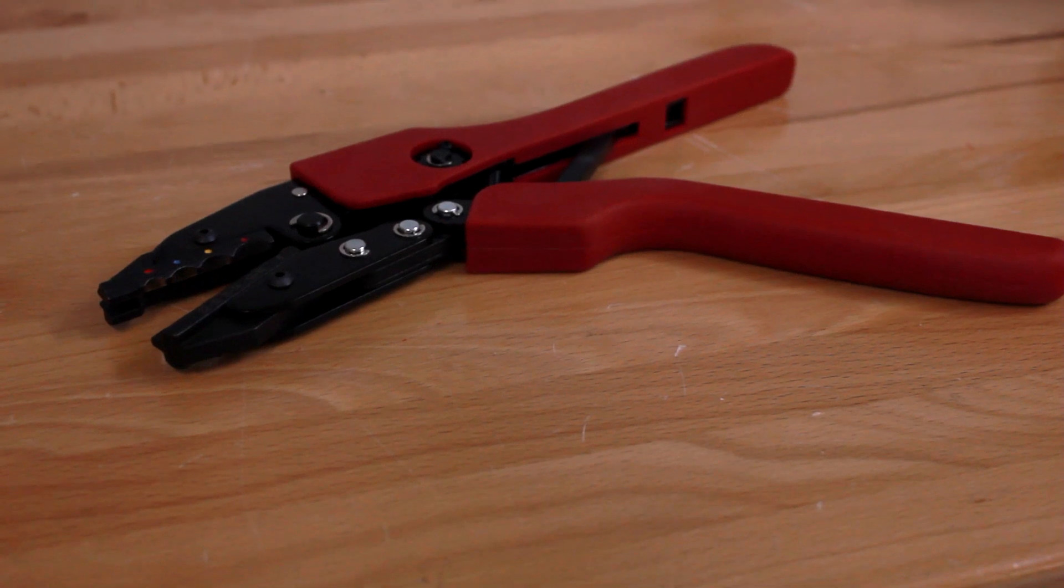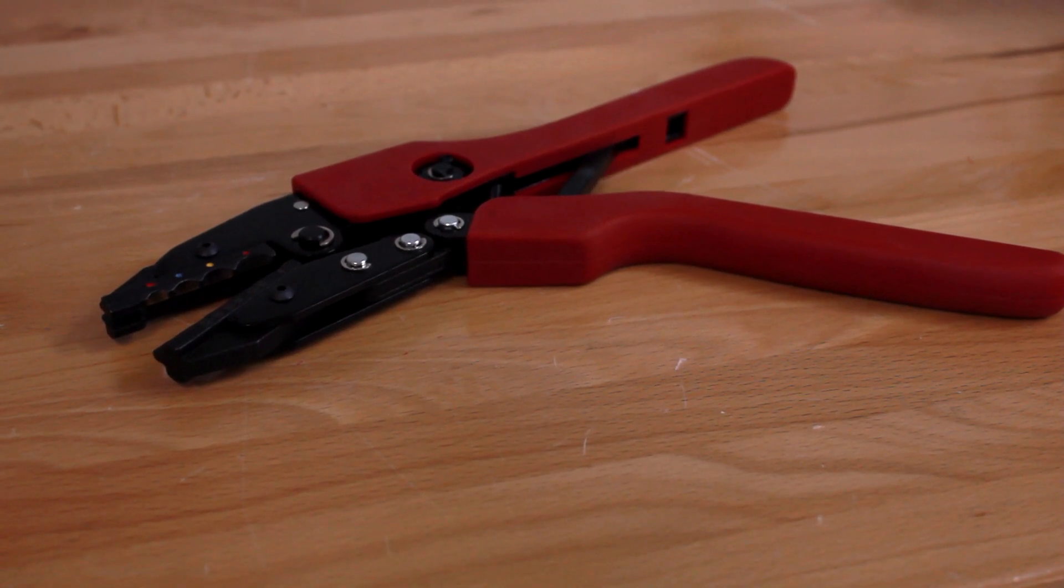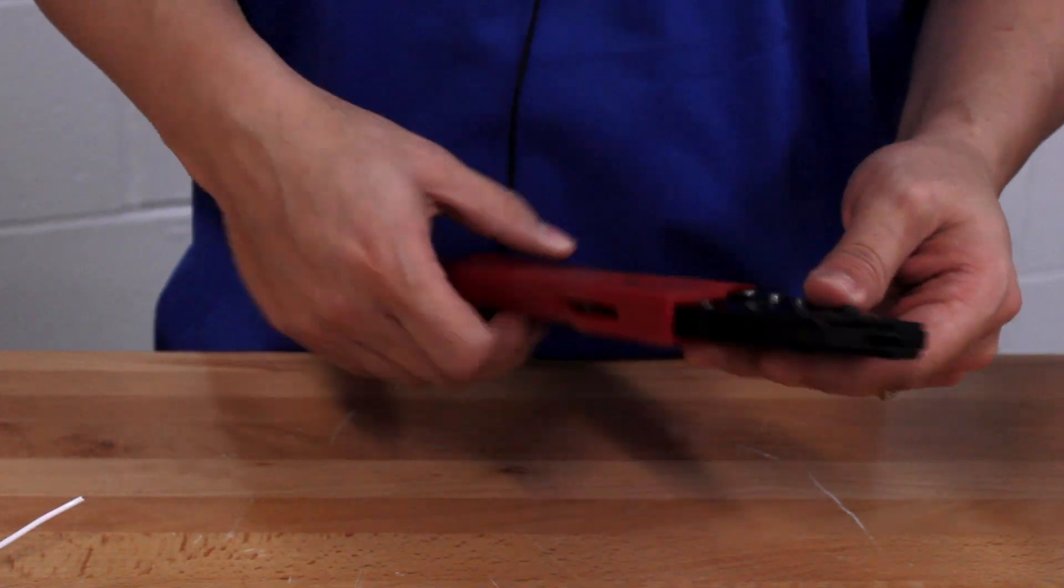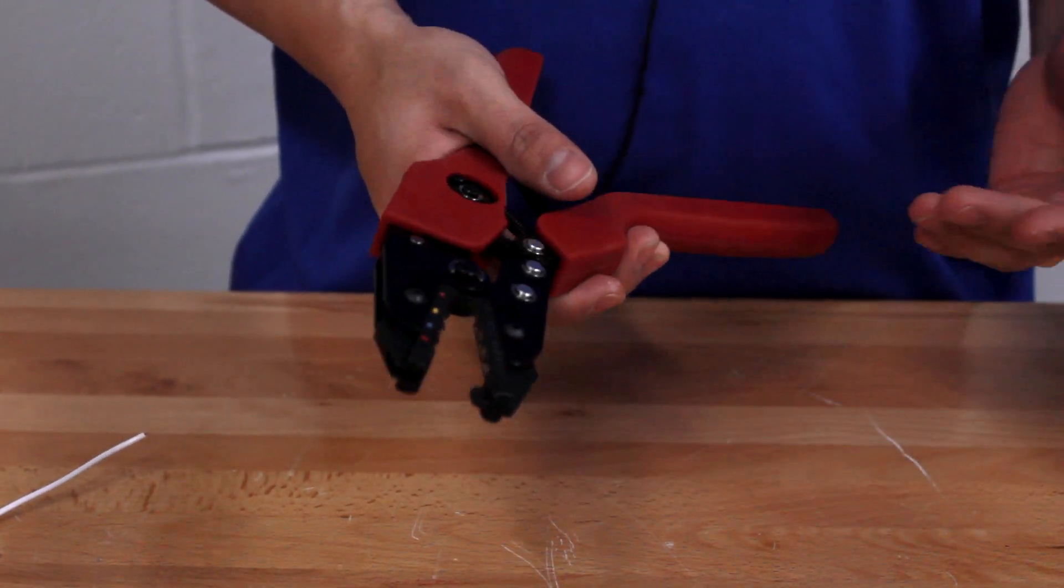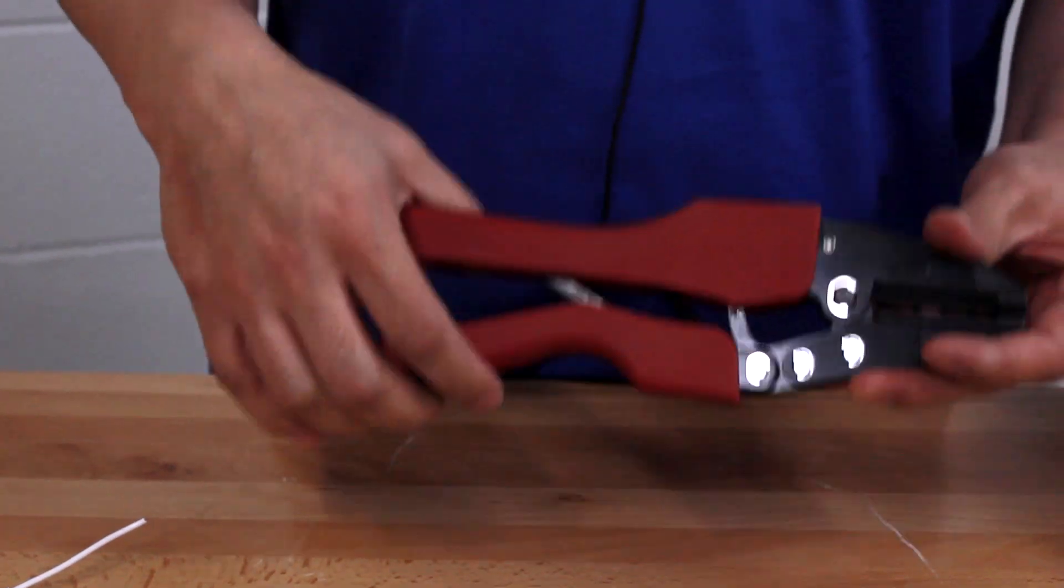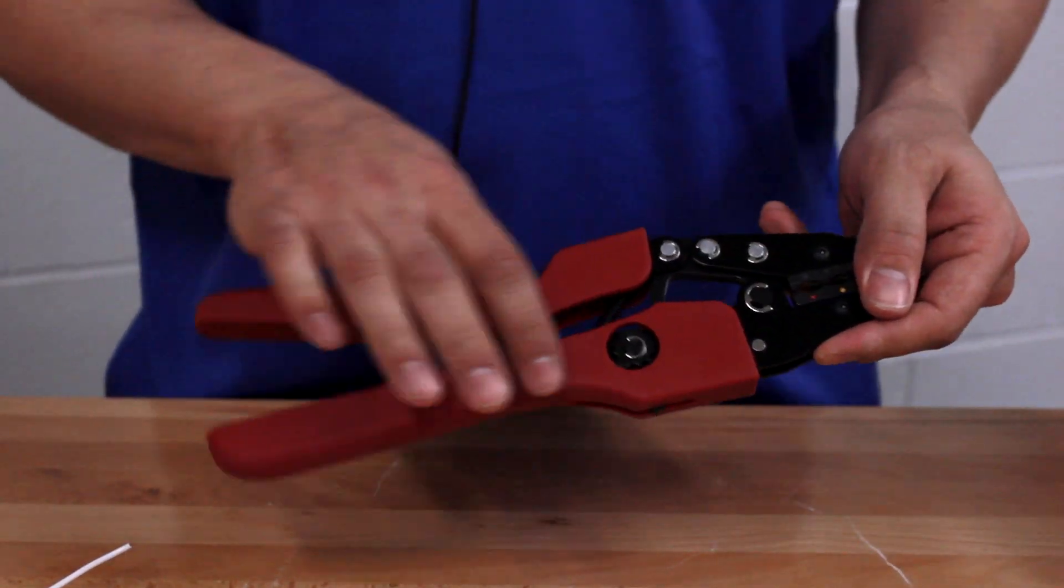Crimp tools are used to secure a piece of wire to a terminal. Designed for heat shrink, this ratcheting crimp tool has four crimp stations that provide superior crimp and reduce the need for multiple tools. This will also crimp standard insulated terminals.